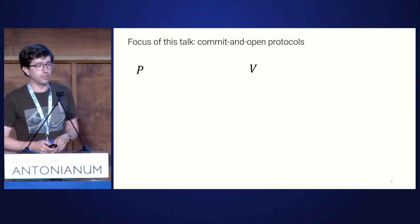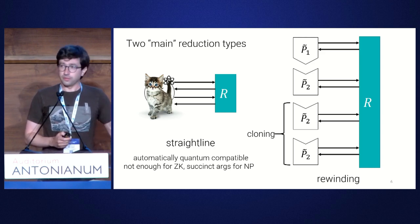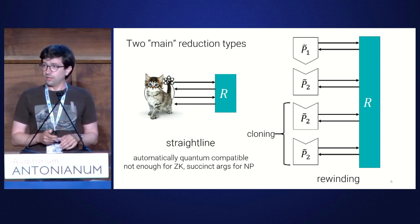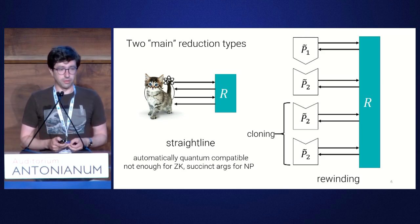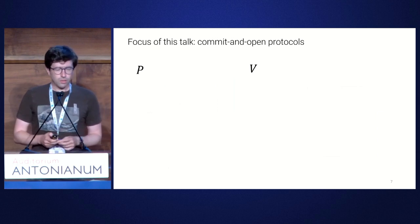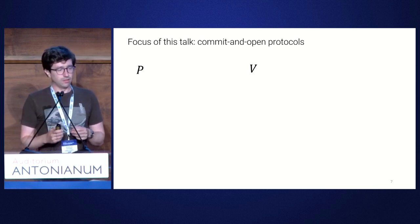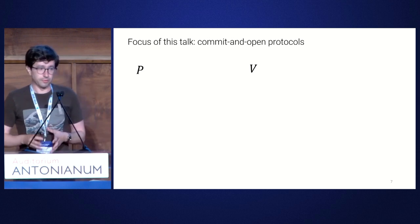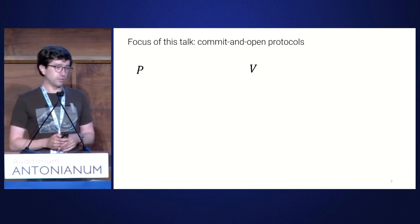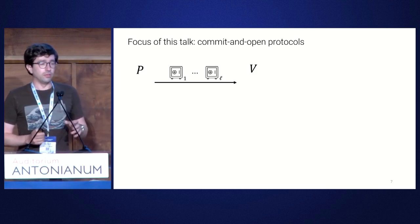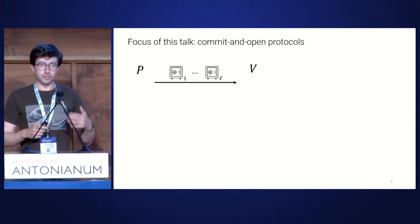I should say this rewinding problem also comes up in other contexts — Nahuel is going to talk about it in the context of zero knowledge. For this talk, I'm going to focus on a very specific problem that is central to interactive arguments: commit-and-open protocols. Conceptually it's three messages: the prover sends commitments — think of them as little safes containing messages — the verifier responds with a subset of indices, and the prover opens that subset.